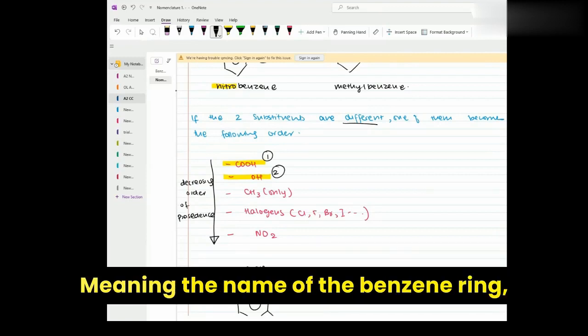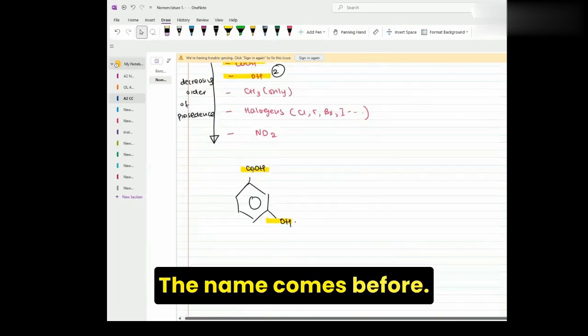Now, the rules say that if the two substituents are different, which is our case, one of them becomes the root group - root group meaning the name of the benzene ring - and the other one is named before. The name comes before.